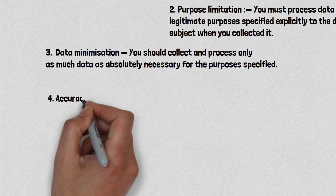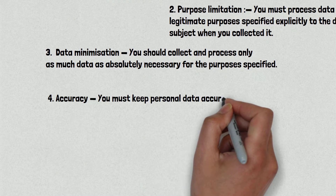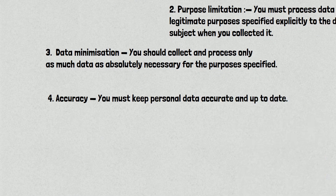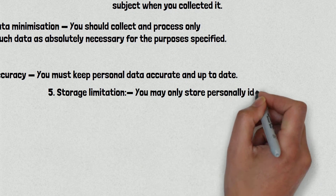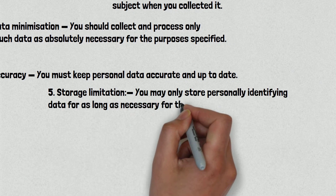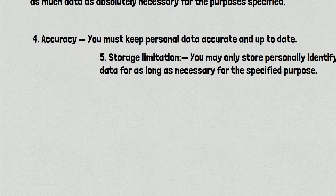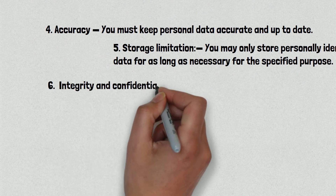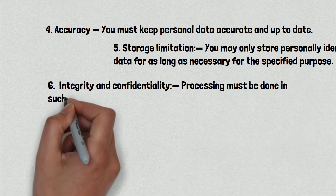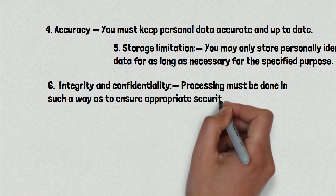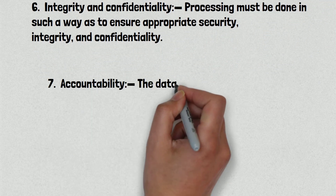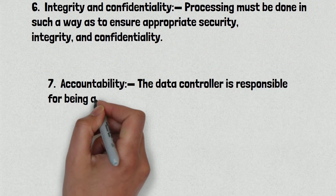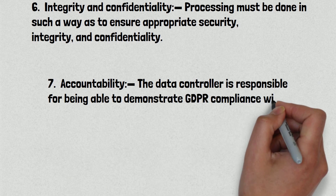Number four is accuracy — you must keep personal data accurate and up to date. Number five is storage limitation — you may only store personally identifying data for as long as necessary for the specified purpose. Number six is integrity and confidentiality — processing must be done in such a way as to ensure appropriate security, integrity, and confidentiality. Number seven is accountability — the data controller is responsible for being able to demonstrate GDPR compliance with all of these principles.